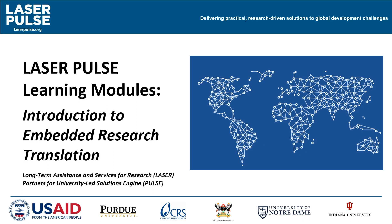LaserPulse does this by initiating a large network for collaboration between researchers and practitioners, building capacity through trainings, and by funding research translation projects all around the world in a variety of fields. As LaserPulse expands its network and reaches more researchers and practitioners, it will offer a series of learning modules — short courses aimed at providing an orientation to LaserPulse's approach, a foundation for mutual understanding of key research and research translation concepts, and additional resources. This learning module focuses on an introduction to embedded research translation.